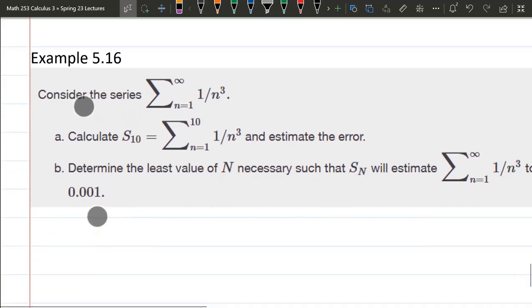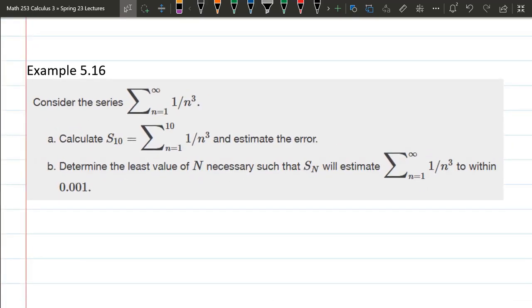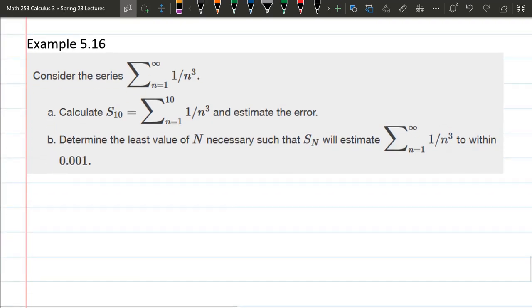So this we have 1 over n cubed. This does converge because it's a p series where p is 3. So we're not asked does it converge or not. This is a partial sum question, so we want to compute S10. I'm not going to compute S10 because that's just adding up 10 of these terms. I don't have a calculator right here, so I'm not going to spend time doing that, but I am going to estimate the error.